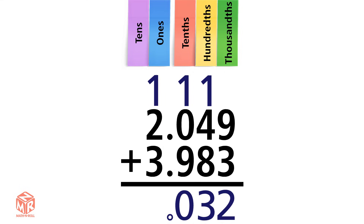Bring down the decimal. Add the ones. 1 plus 2 plus 3 equals 6. So 2 and 49 thousandths plus 3 and 983 thousandths equals 6 and 32 thousandths.